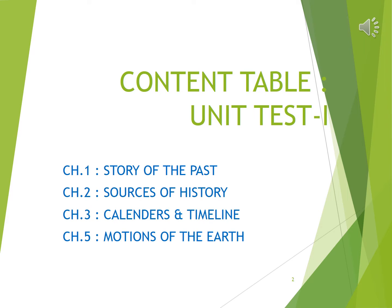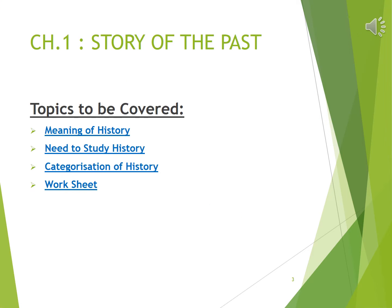Children, this is the content table of your unit test one. Four chapters have been included in it: Chapter 1 Story of the Past, Chapter 2 Sources of History, Chapter 3 Lenders and Timeline, and Chapter 5 Motions of the Earth.